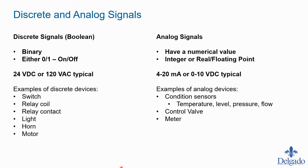There are two types of signals used in a PLC: discrete signals, also called boolean, and analog signals. When you create a new tag in the controller you define the tag type, and the term 'boolean' is used for a discrete signal. A discrete signal is simply a binary number — an on or an off. An example would be a light switch: you turn it on, the light comes on; you turn it off, the light goes off. There's no in-between state — we're not talking about a dimmer switch here.